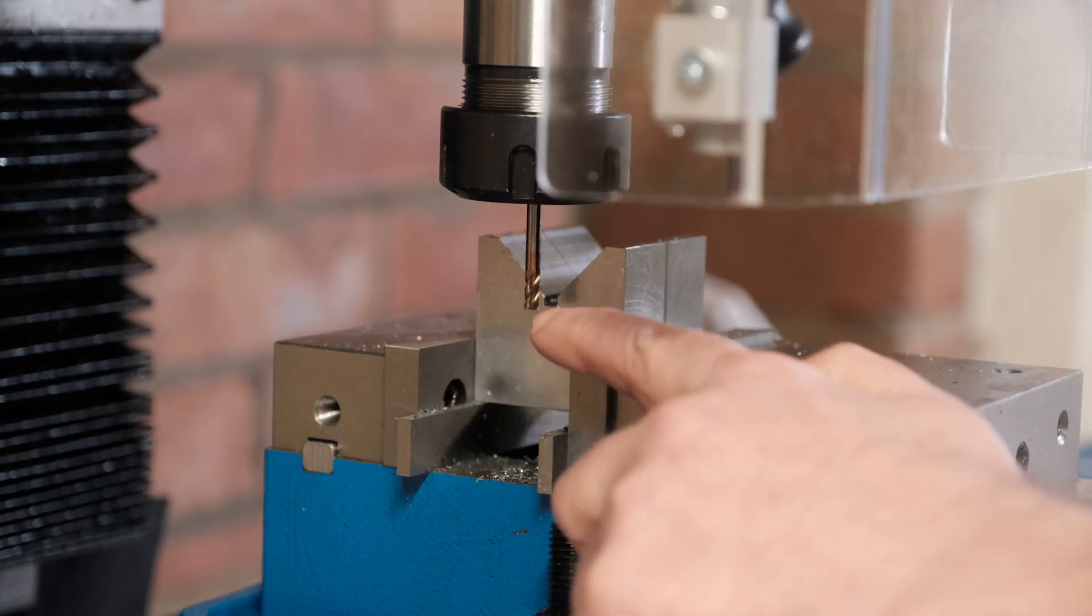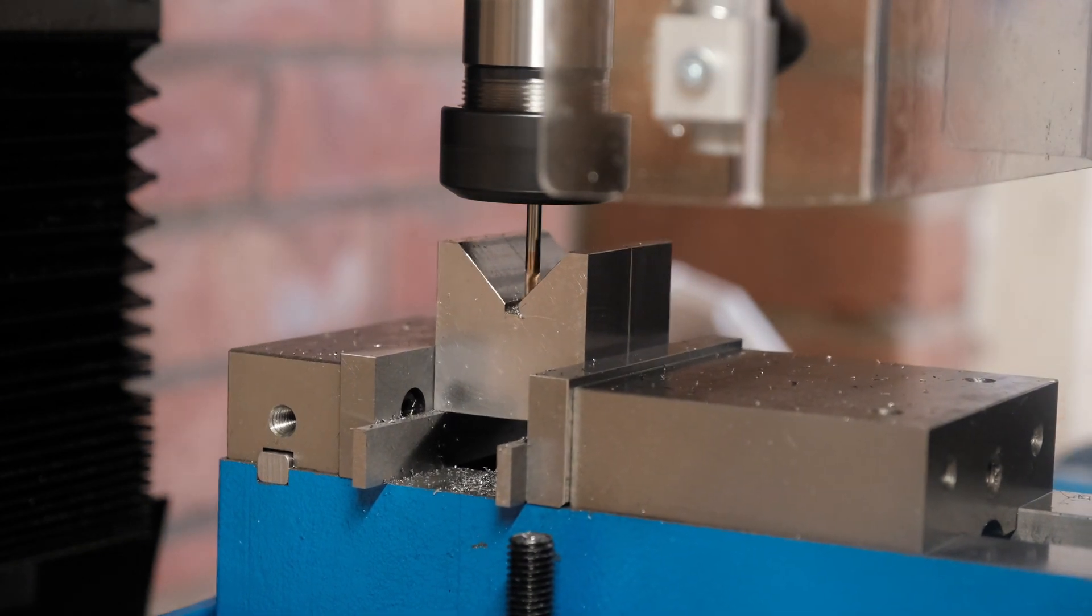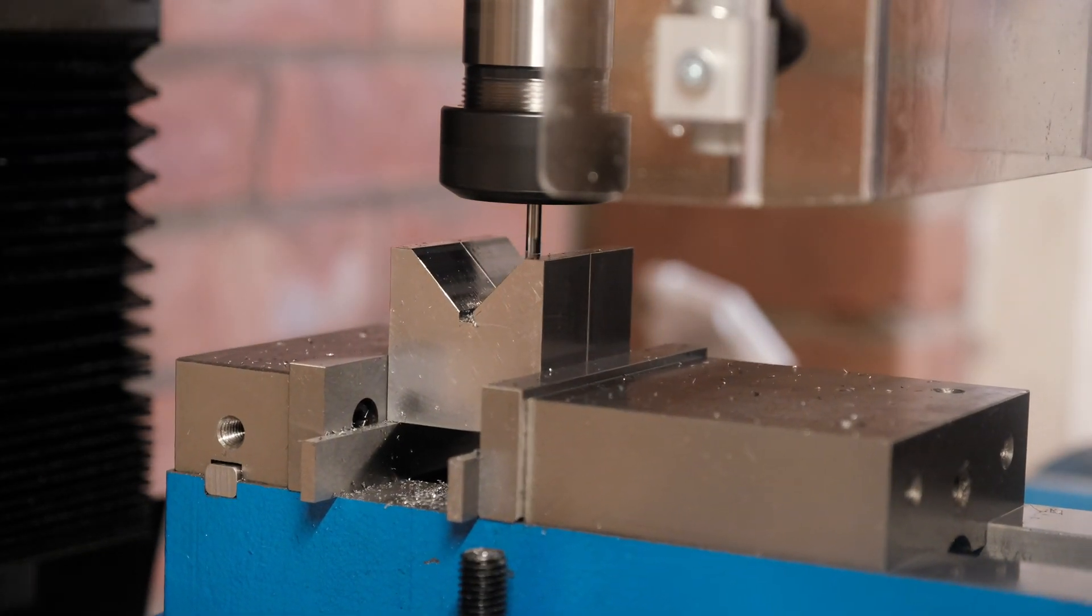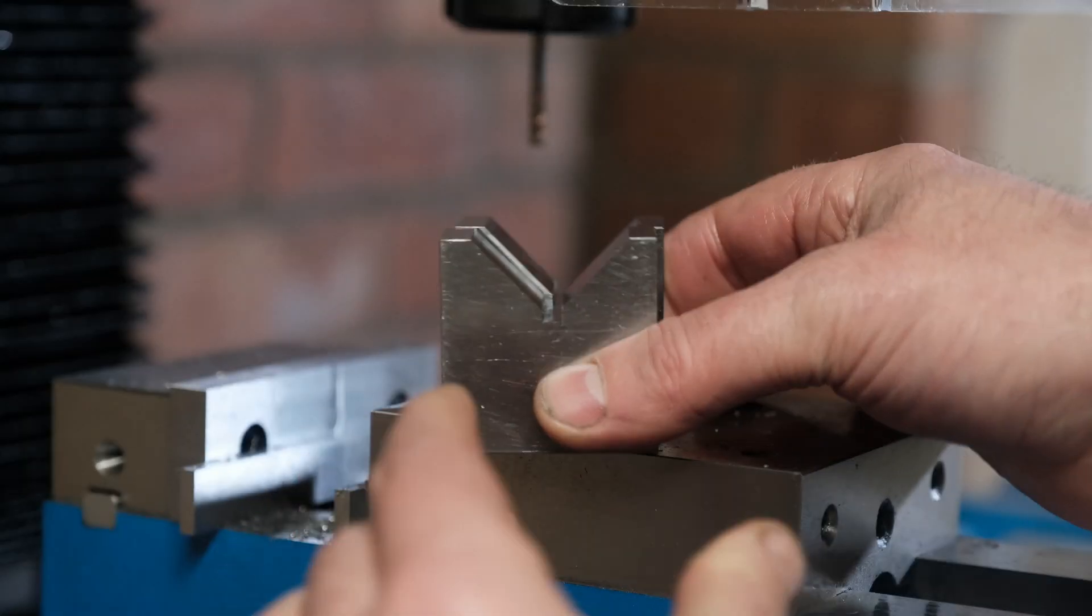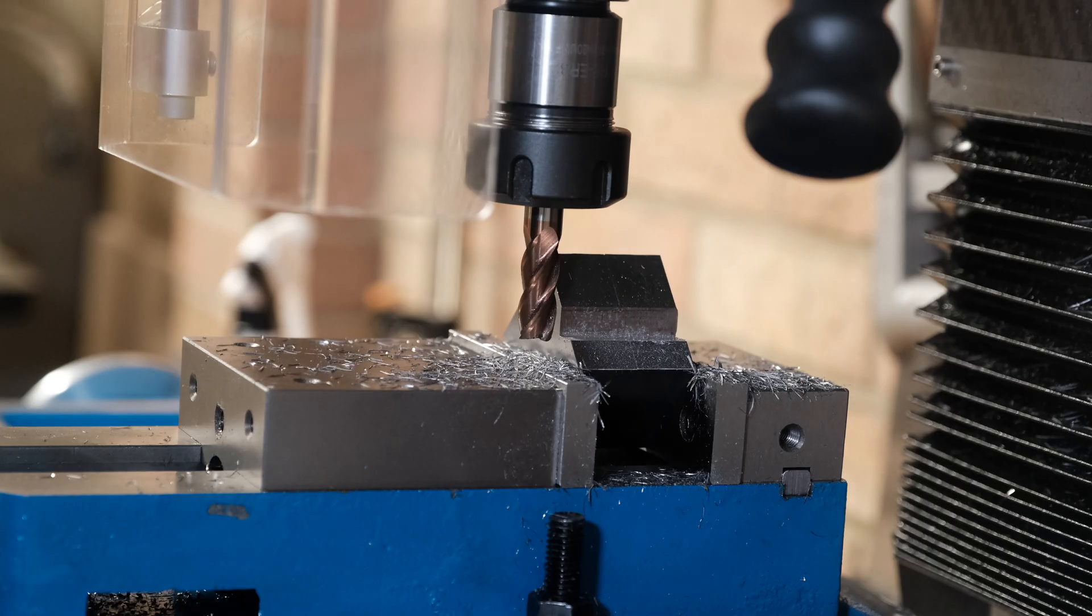I'm just going to make one more very light clean up pass and that should be that job done. So I'm just going to complete putting in the second V. I've already started there, I'm just using a 12mm end mill. So let's carry on and get this finished.